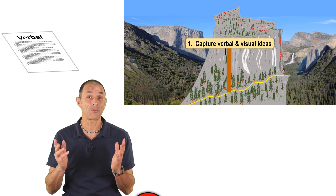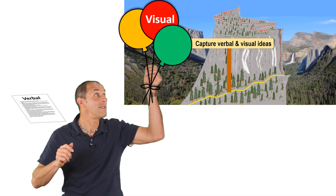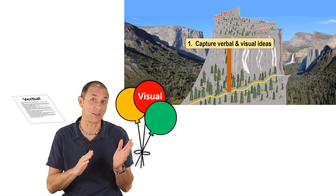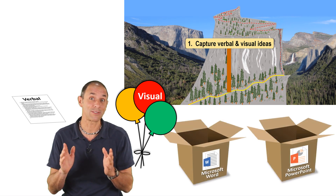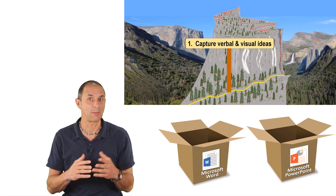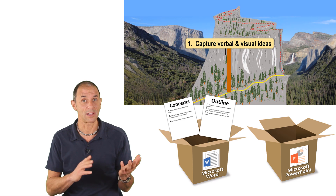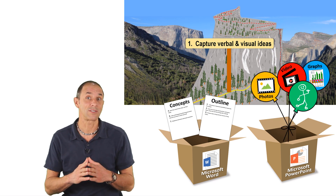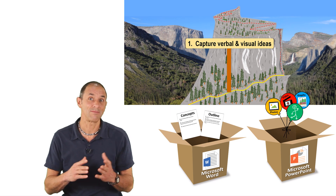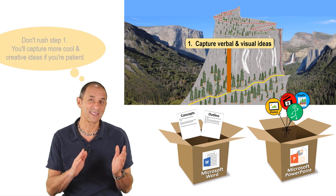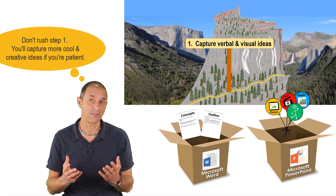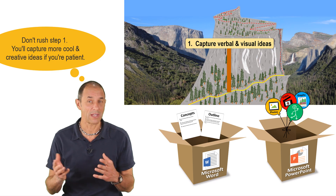The first step involves capturing the verbal and visual ideas or ingredients that I might use in my video. I put these in a place where I can find them later when I need them. The verbal ideas might be a list of words or concepts I want to include, whereas the visual ideas could be a whole bunch of different things. The first step is pretty relaxed and easy, but it can be extended over several days to weeks to years, depending on the complexity of the video and when I want to get it done.